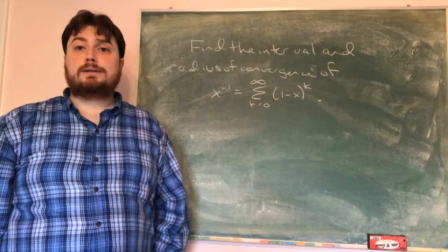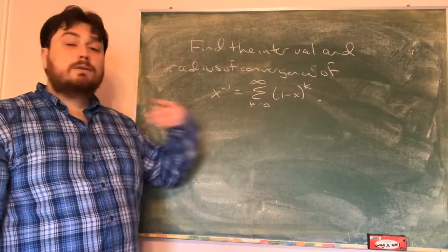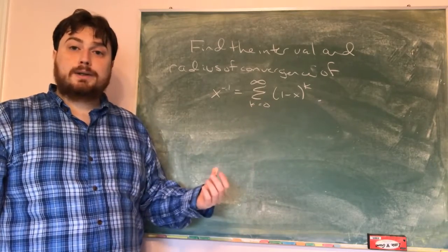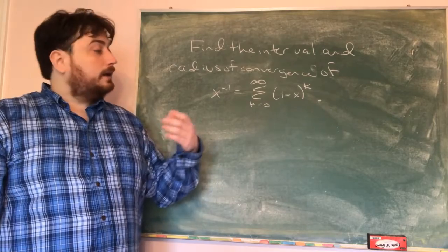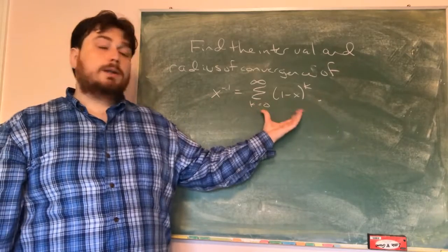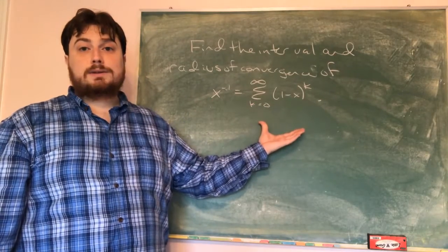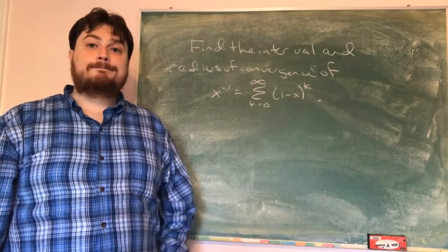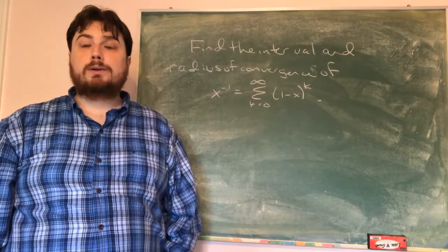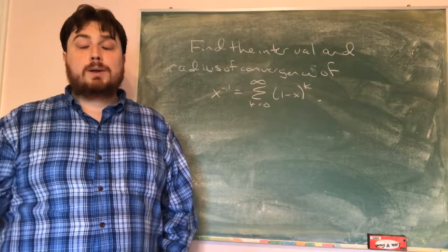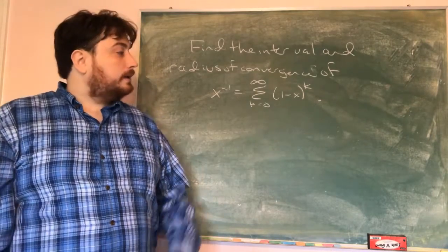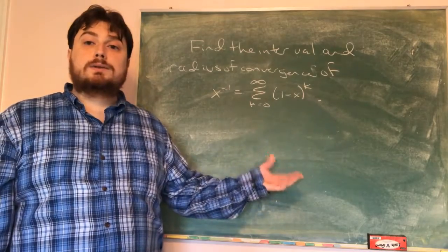Now that we've found our Taylor series, our next goal is to find the interval and the radius of convergence — that is, what x values does this make sense for? Sometimes series converge, sometimes they diverge. We're claiming that this function equals this series as long as it converges, but if it diverges we don't get the same thing. So we'll go through our decision tree and try to find a test to determine when it converges and when it diverges.